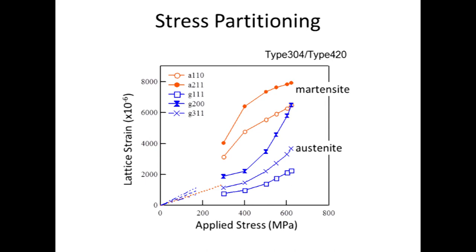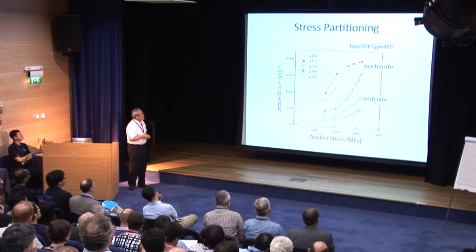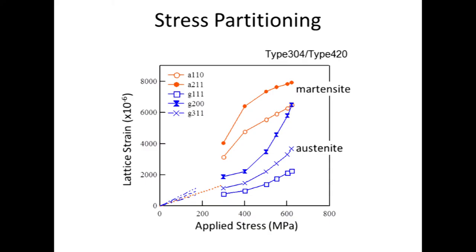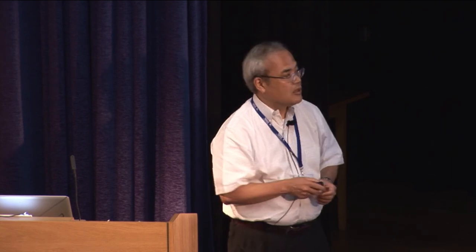By controlling interfacial toughness and controlling the thickness of brittle layers, we can now elongate as-quenched martensite. Applying neutron diffraction, you can measure the full partitioning of stress, and because of this stress partitioning, martensite is being elongated. As a result, we obtain steels with high strength and high ductility — strength of more than 1200 MPa, elongation of more than 20%, and a product of strength and elongation more than double that of conventional monolithic steels.